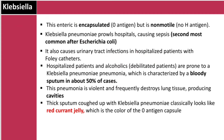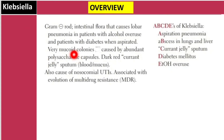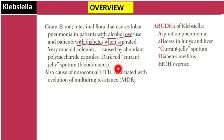In overview: Klebsiella pneumoniae is a gram-negative rod and intestinal flora that causes lobar pneumonia in patients with alcohol overuse and diabetes when aspirated — making it an aspiration pneumonia. It produces very mucoid colonies due to its abundant polysaccharide capsule, and produces dark red currant jelly sputum, which can be blood or mucus. It also causes nosocomial or hospital-acquired urinary tract infections.